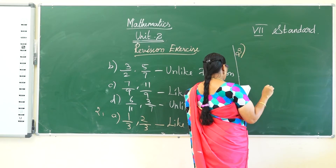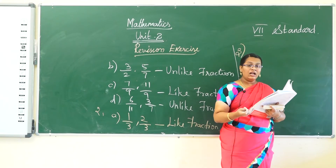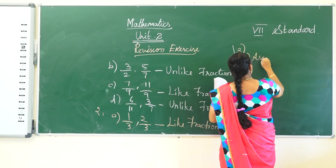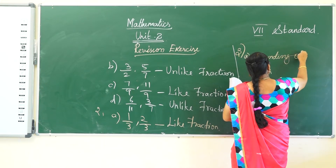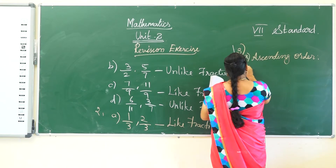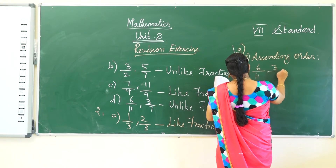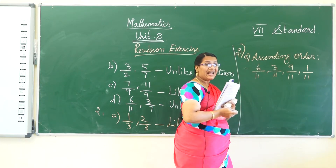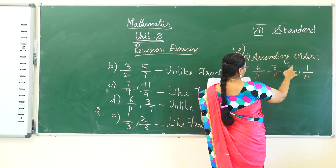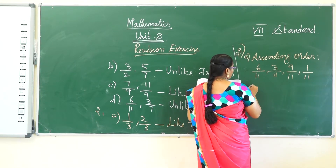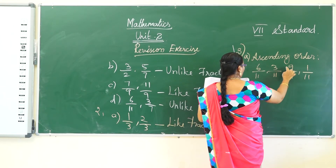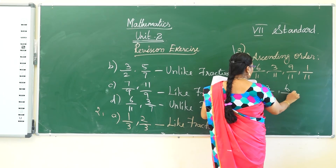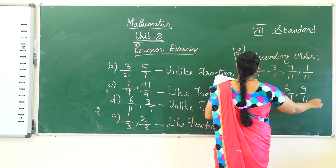Third problem: write the following fractions in ascending order. Ascending order means arrange from smallest to largest. For the first set, all fractions are like fractions with denominator 11, so we write easily from smallest to largest: 1 by 11, 3 by 11, 6 by 11, 9 by 11.